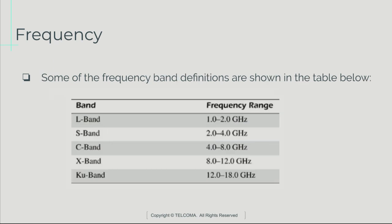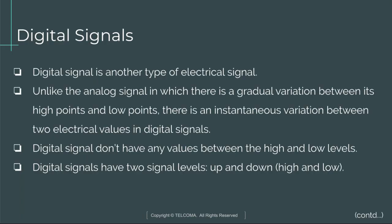This table shows some frequency band definitions. For L-band, a frequency range from 1 to 2 GHz is used. For S-band, 2 to 4 GHz. For C-band, 4 to 8 GHz. For X-band, 8 to 12 GHz. For Ku-band, 12 to 18 GHz frequency range is used.